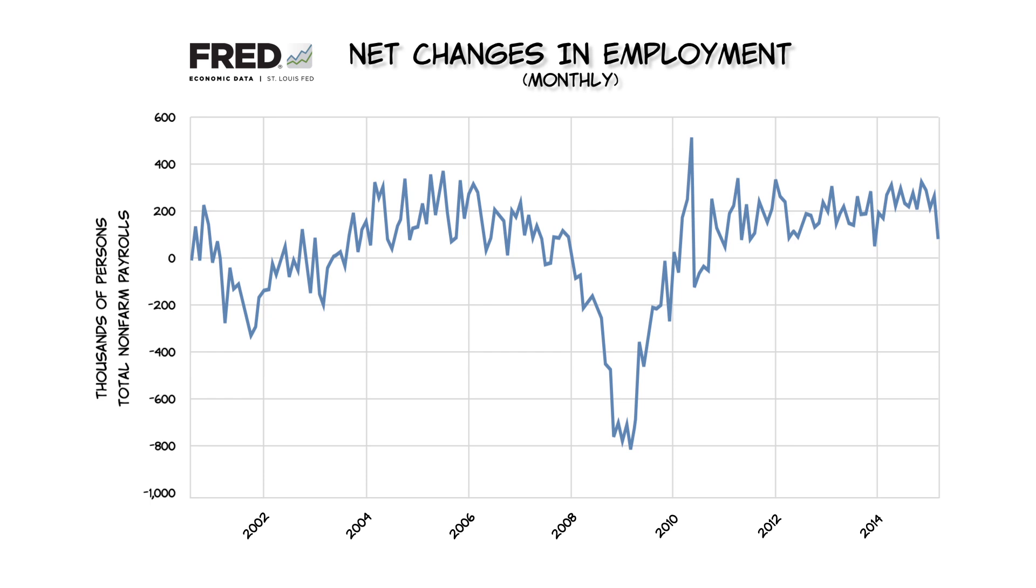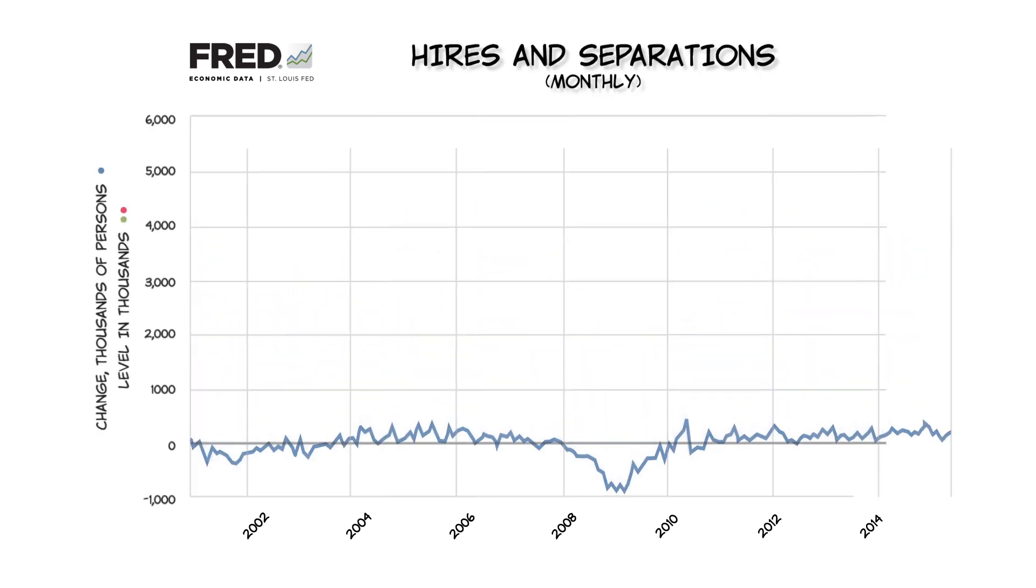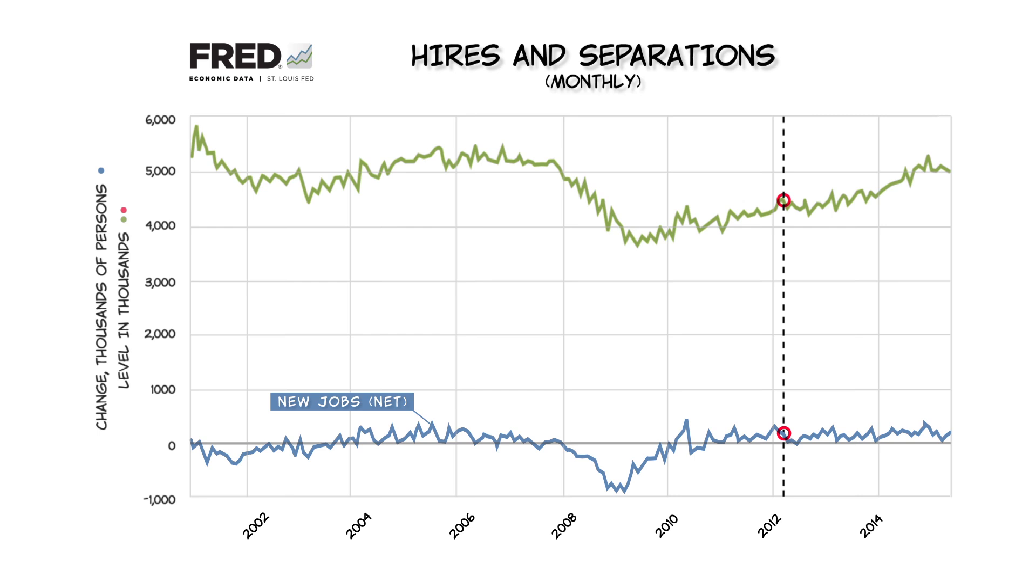Now, these figures are useful, but it's important to understand that these are net changes. When the news reports that 200,000 new jobs were created this month, what actually happened is that there were around 4.5 million new hires and 4.3 million new separations, that is quits or layoffs. So the net number hides the vast amount of job change which is actually happening behind the scenes.